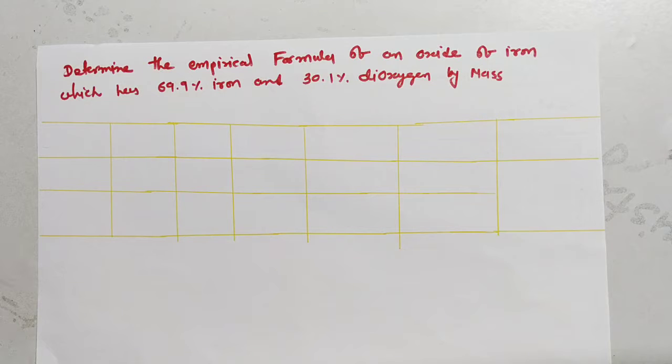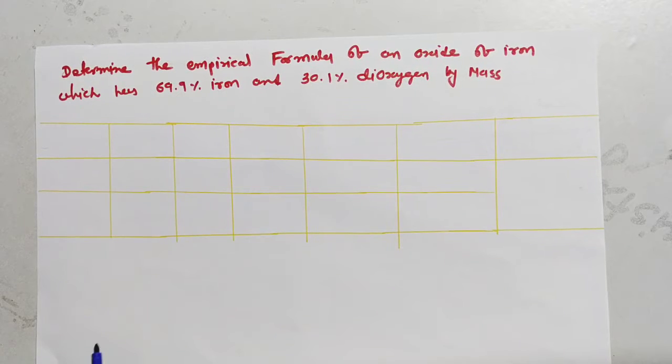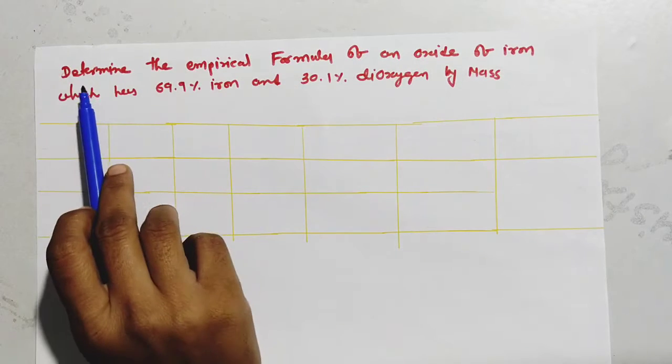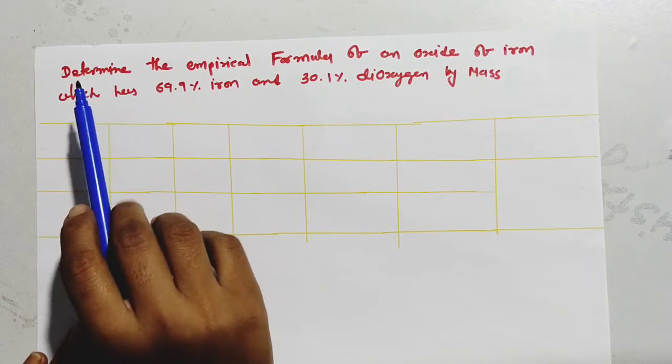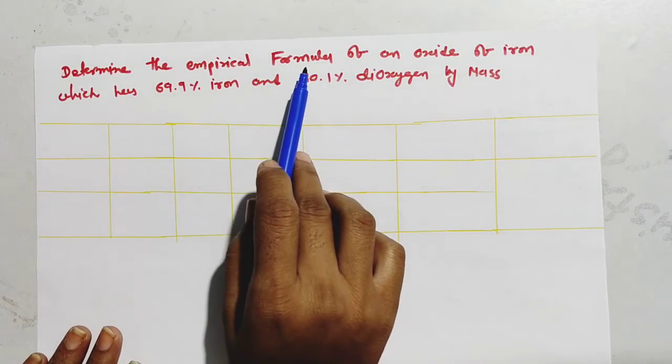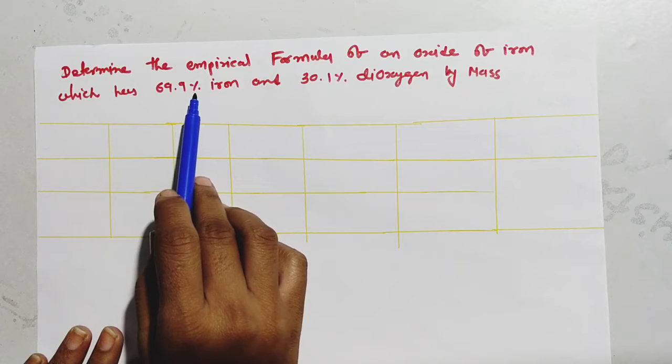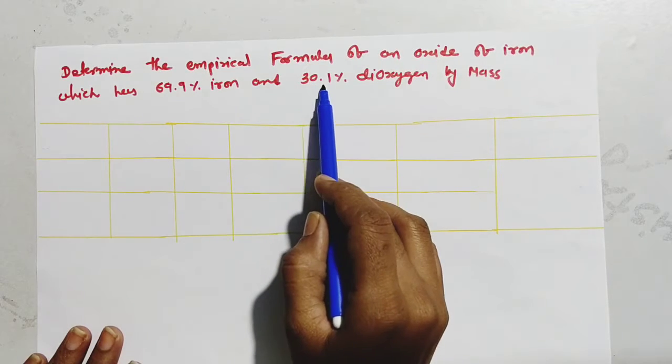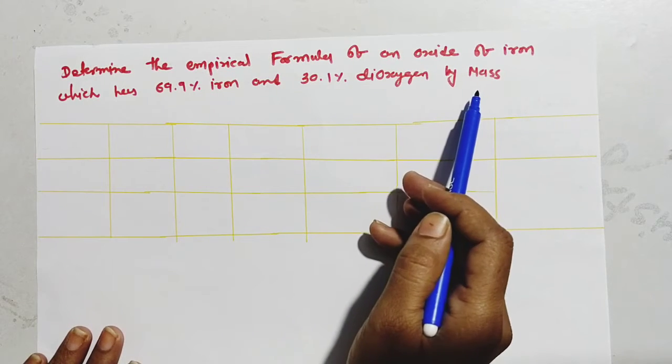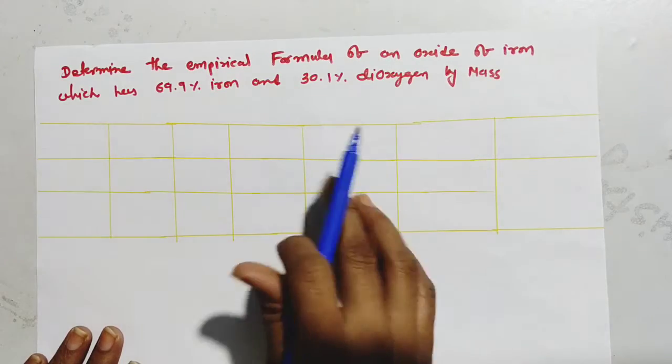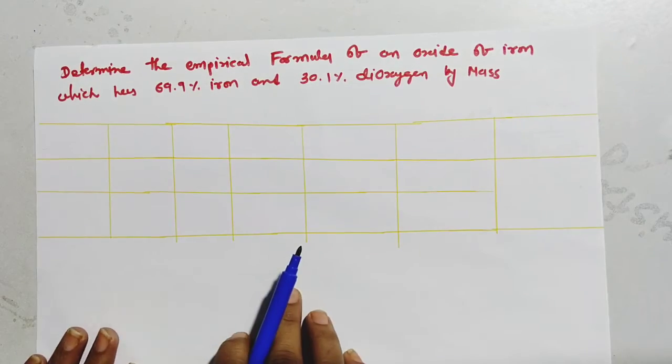Now today we are learning about chapter number 1 and how to find an empirical formula. This is a question from your exercise. Determine the empirical formula of an oxide of iron which has 69.9% iron and 30.1% dioxygen by mass. We have to find this empirical formula.